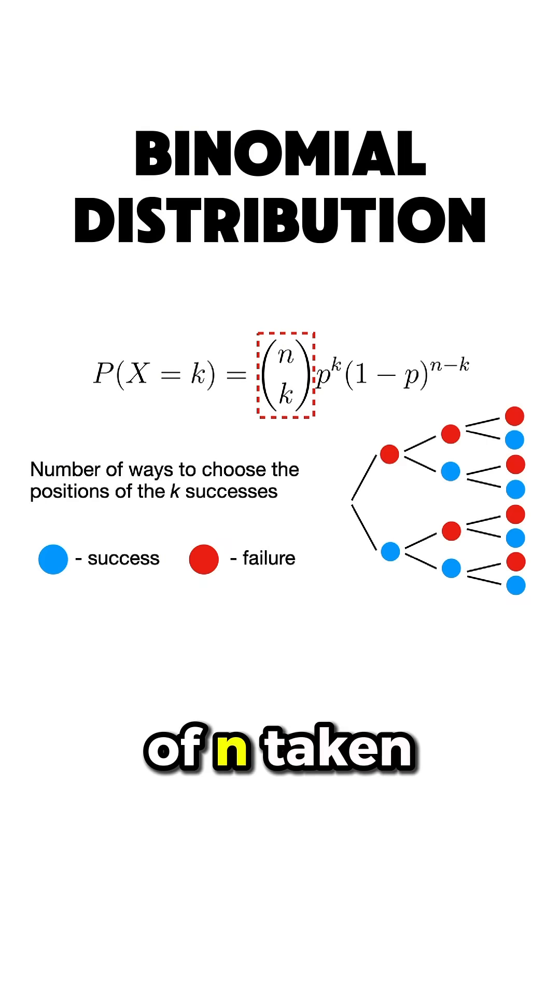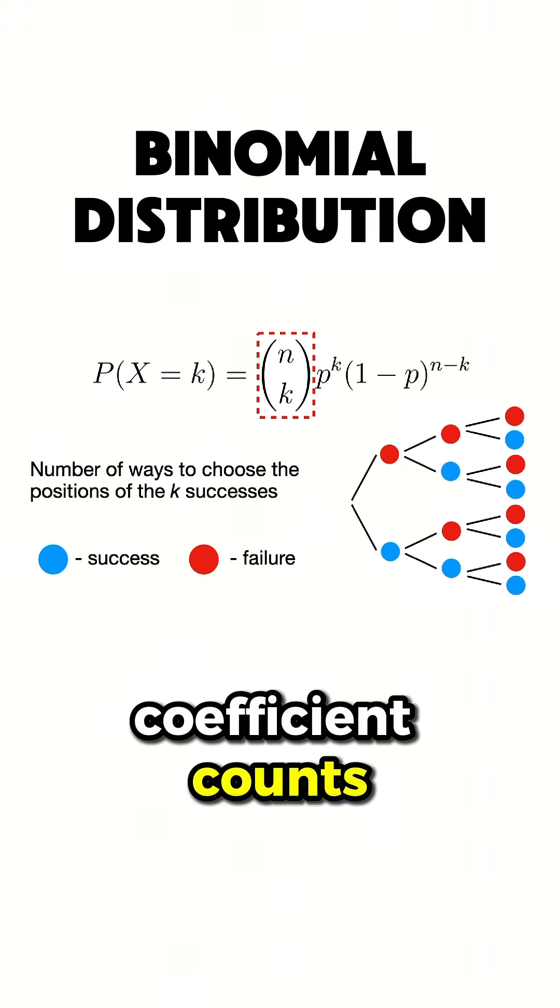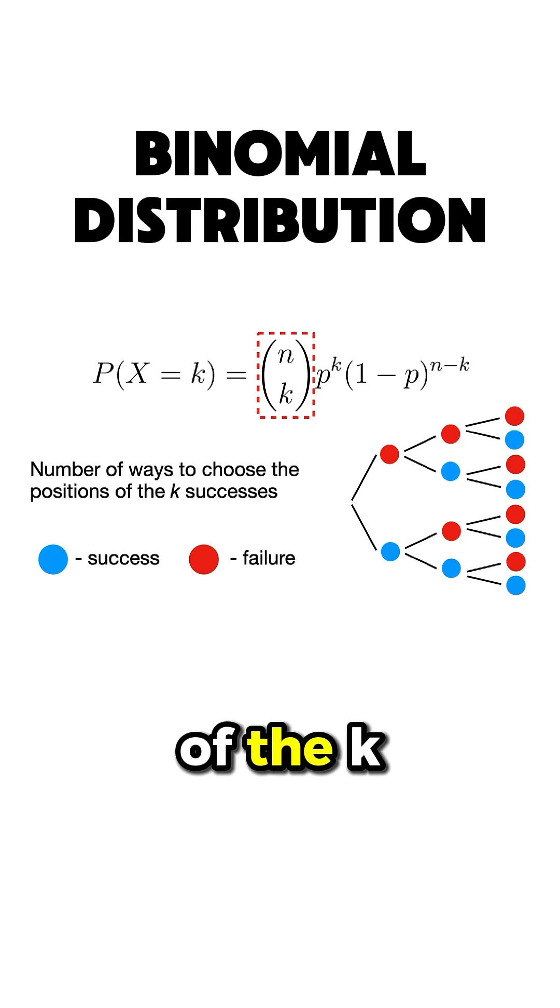There are combinations of n taken k such sequences, since the binomial coefficient counts the number of ways to choose the positions of the k successes among the n trials.